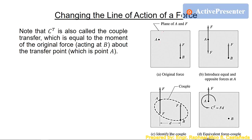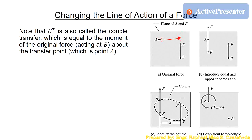The couple transfer is also equal to the moment of force F at point B when we consider point A as the moment center. The distance D is shown in the figure. So the couple transfer is the moment — force times distance — of force F acting at the original location when we consider the transfer point as the moment center. That's another way of thinking about what the couple transfer is.